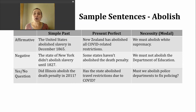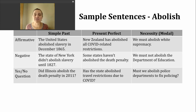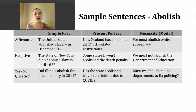Let's look at a yes or no question in the simple past tense. To do that, I'm going to start with 'did,' then my subject, and then the base verb — no -ed. Here's a question: Did Illinois abolish the death penalty in 2011? The quick answer to that, in case you're wondering, is yes. This question is asking about ending the practice of sentencing someone to death for committing a very serious crime — usually, it's reserved for murder.